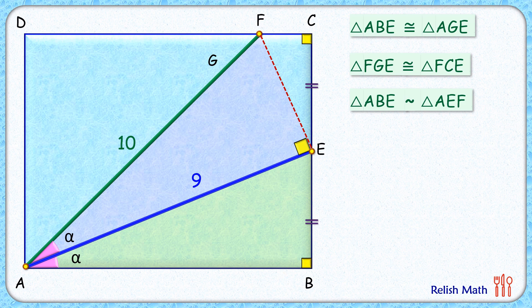As the triangles are similar, thus the ratio of corresponding sides will be equal. So that is AB upon AE will be equal to AE upon AF.